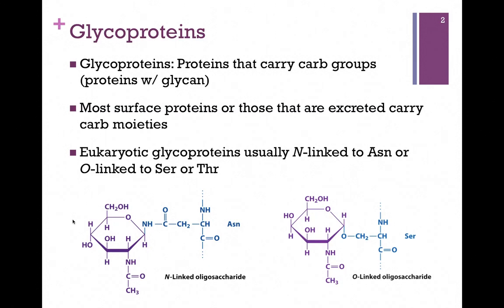In eukaryotic systems, glycoproteins are either N-linked to the amino acid asparagine — pictured on the lower left here — or O-linked to serine or threonine, pictured on the lower right here.